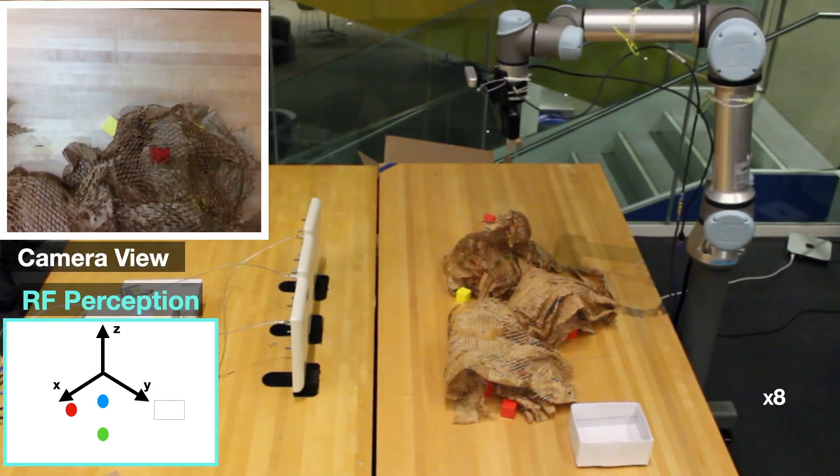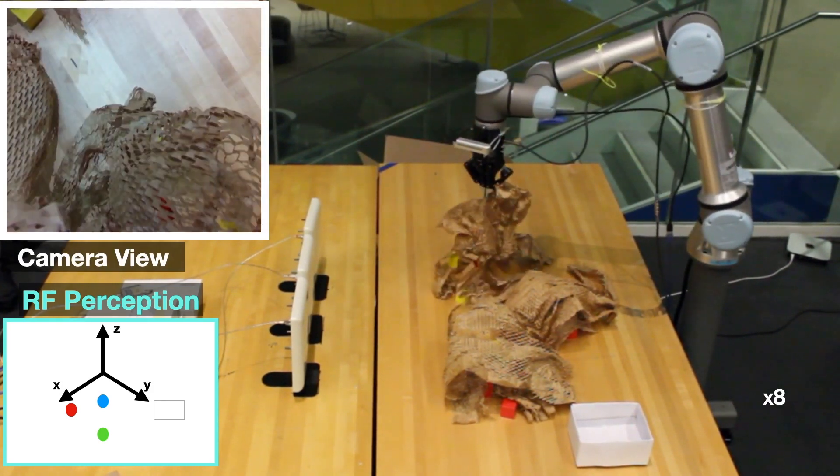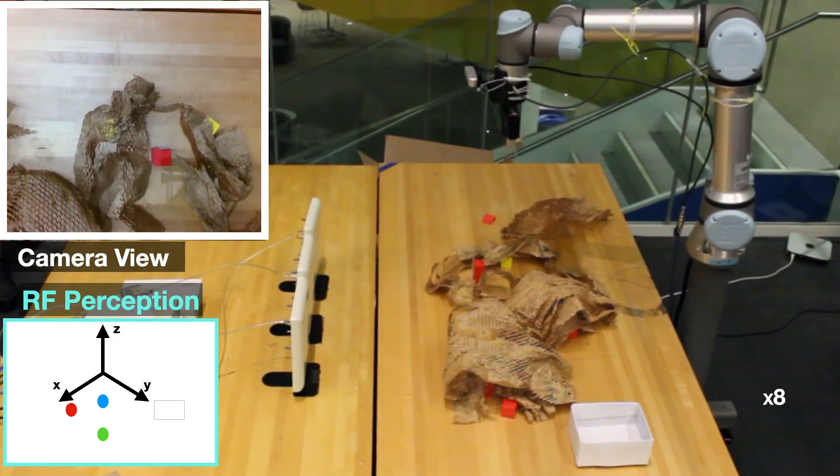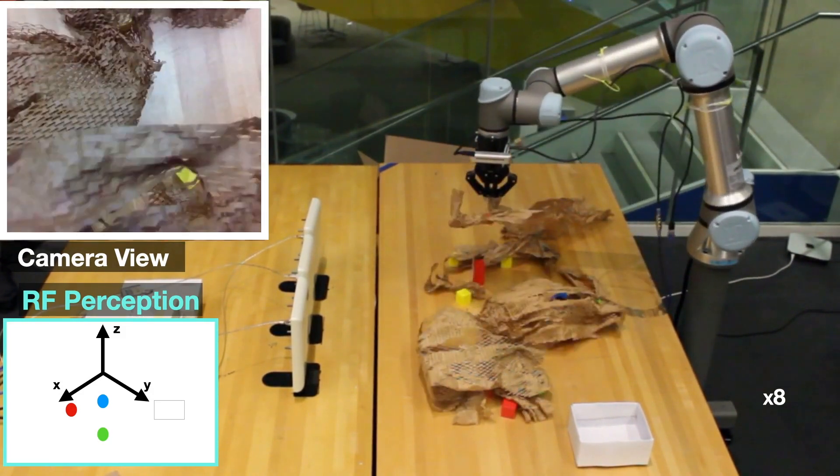It localizes an object from the requested category, moves above it, declutters vicinity, and then grasps it and puts it in the bin.